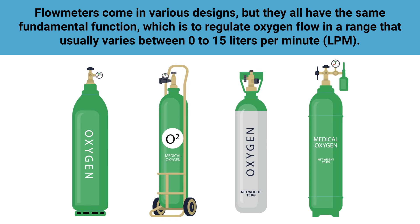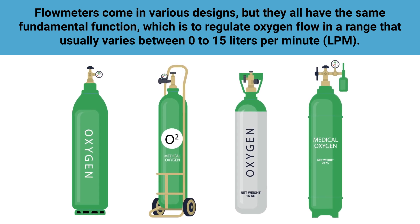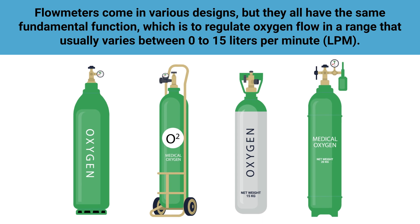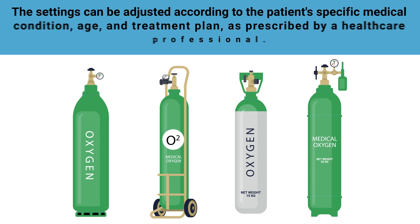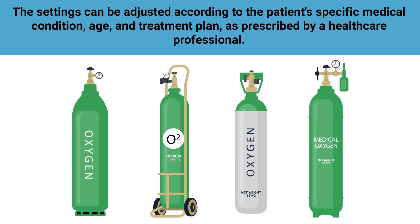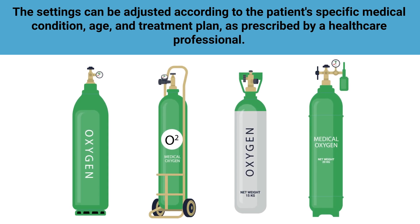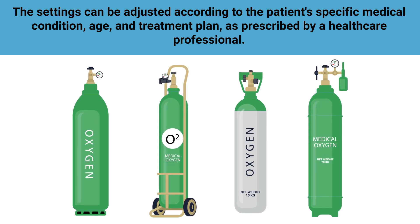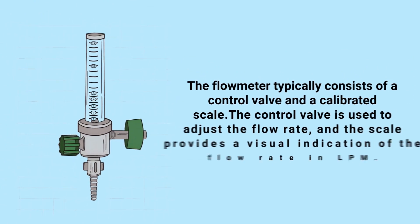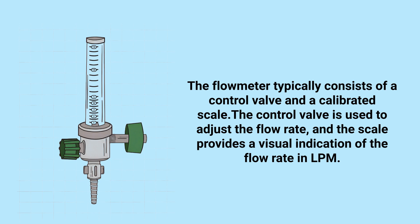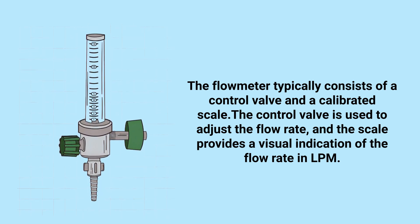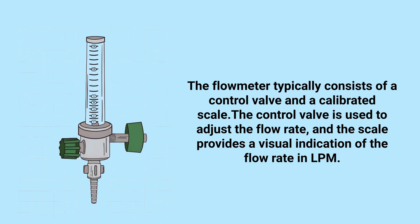Flow meters come in various designs but all share the same fundamental function: to regulate flow in a range that usually varies between 0 and 15 liters per minute. The settings can be adjusted according to the patient's specific medical condition, age, and treatment plan as prescribed by a healthcare professional. The flow meter typically consists of a control valve and a calibrated scale — the control valve adjusts the flow rate, and the scale provides a visual indication of the flow rate in liters per minute.